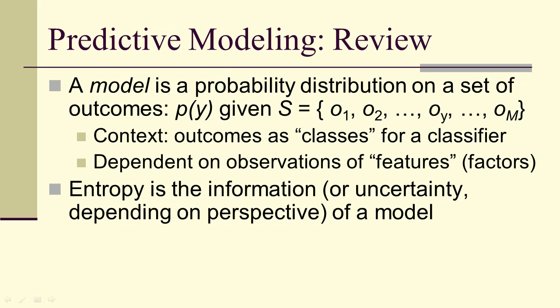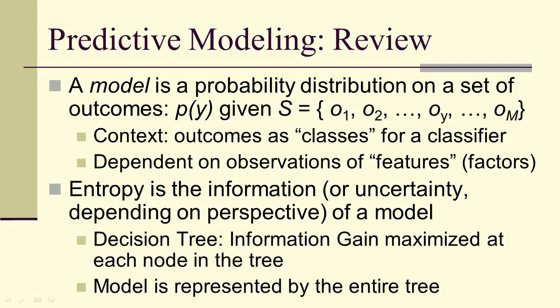We'll use entropy, which is the information or uncertainty, depending on your perspective of a model. For instance, a decision tree was information gained maximized at each node in the tree, and then the model was the entire tree.